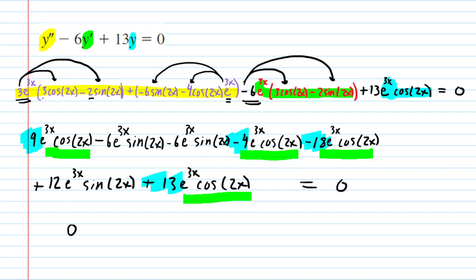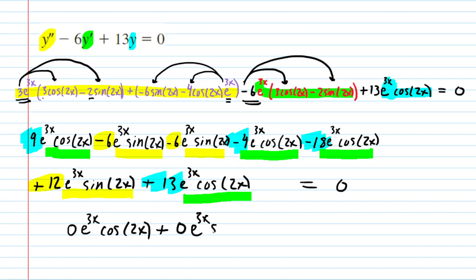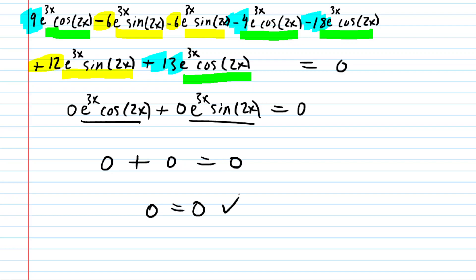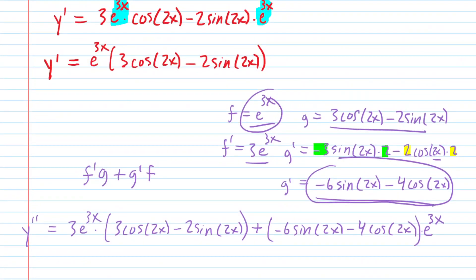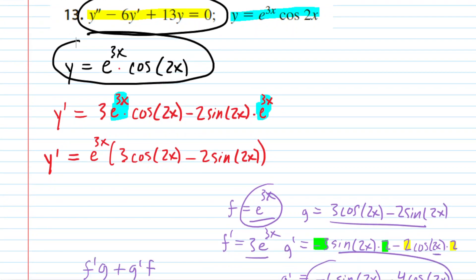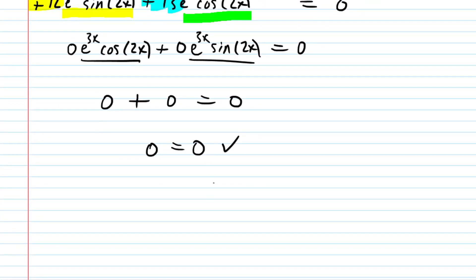The cosine of 2x coefficient is 0, so that group vanishes. Doing the same for the sine of 2x terms: the coefficients are negative 6 minus 6 plus 12, which also equals 0. So the sine of 2x terms vanish as well. We get 0 equals 0. We have verified that the given solution is a solution to the differential equation, because substituting it along with its first and second derivatives and simplifying yields 0 equals 0.